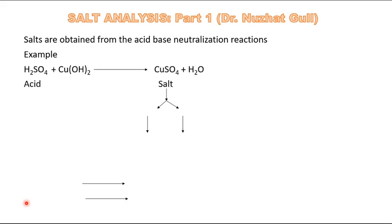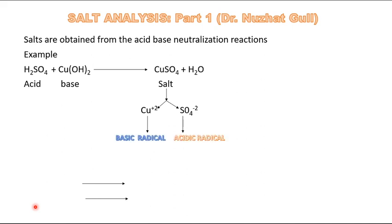The salt contains a portion — an ion that it has received from the acid and an ion that it has received from the base. If we observe carefully, in copper sulfate, copper has been obtained from the base and sulfate ion has been obtained from the acid.